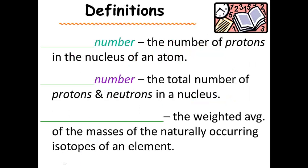So, definitions here. The number of protons in the nucleus of an atom is atomic number. The total number of protons and neutrons in the nucleus is the mass number. We're also going to talk about something that is a weighted average of the masses of the naturally occurring isotopes of an element. And this is referred to as the average atomic mass.